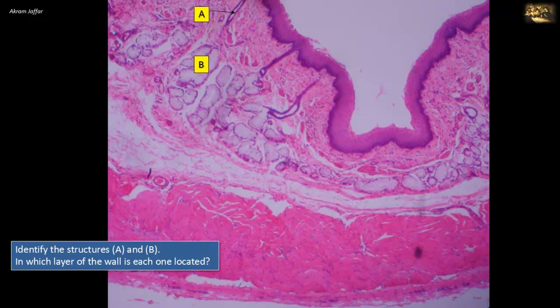Identify structures A and B and state which layer of the wall each is located in. This is a section of the gut tube showing the four distinct functional layers: mucosa, submucosa, muscularis externa, and adventitia. The inner layer where marker A is located is the mucosa, which consists of three parts: epithelium, lamina propria of connective tissue, and a very thin interrupted layer of smooth muscle fibers called the muscularis mucosae.